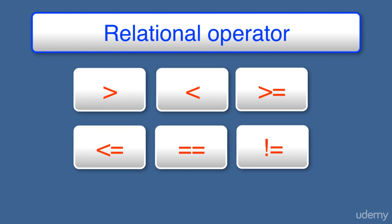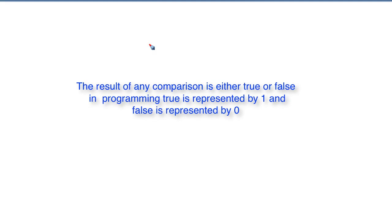All of these operators work pretty much in the same way. They compare the operands and return either true or false in terms of 1 or 0. They compare the values and return either 1 or 0 — 1 is returned if the comparison is true, and 0 is returned if the comparison is false.